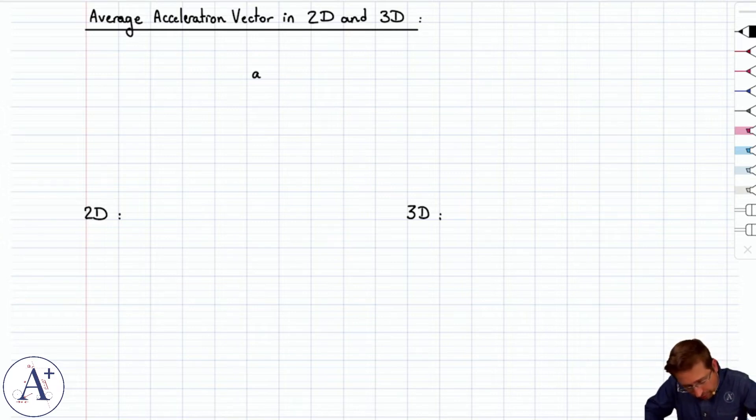So recall that we had defined the average acceleration vector along the x direction as overall it's delta v over delta t, but really if you only can go in one direction along the x axis, that's v final x minus v initial x divided by t final minus t initial carried by x hat.